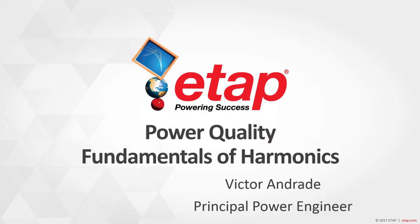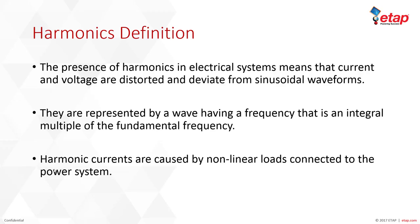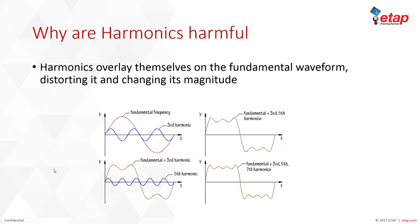This presentation covers fundamentals of harmonics, which falls under the power quality analysis modules. The presence of harmonics in electrical systems means that current and voltage are distorted and deviate from sinusoidal waveforms. They are represented by a wave having a frequency that is an integral multiple of the fundamental frequency. Harmonic currents are caused by nonlinear loads connected to your power system.